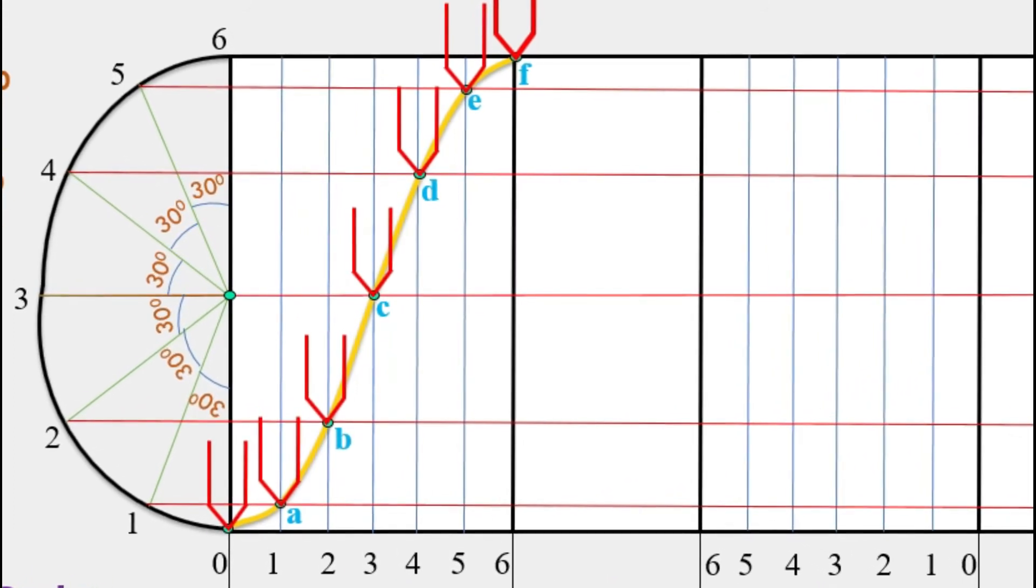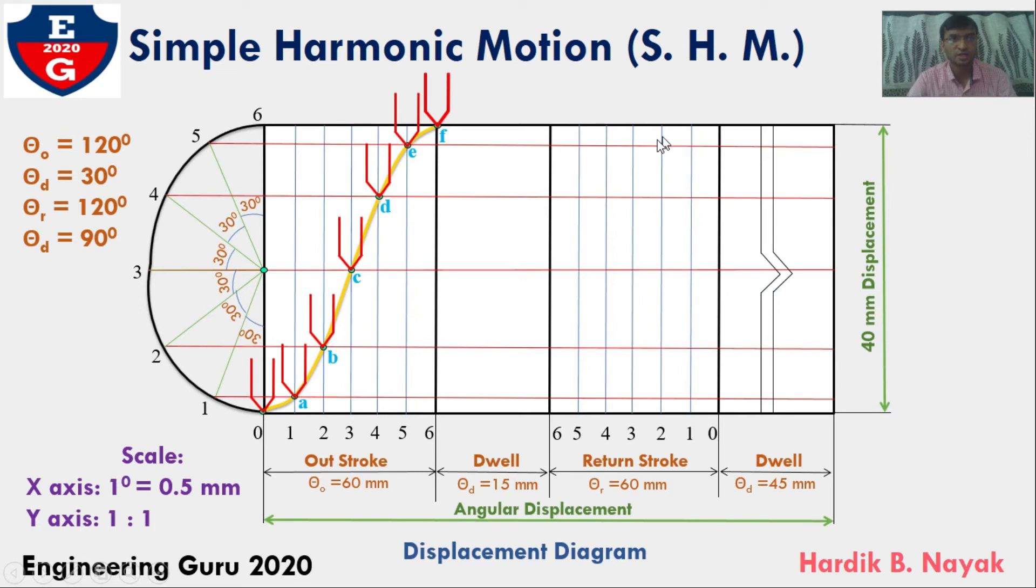This is simple harmonic motion for outstroke. During the dwell, follower remains at same height. Draw the dark line to this point, and that indicates dwell. The follower moves this way.